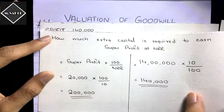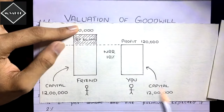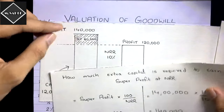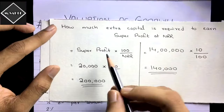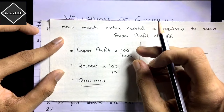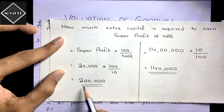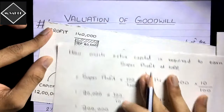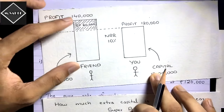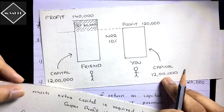In the capitalization method, we take that super profit and find out how much extra capital is required to earn that super profit at the normal rate of return. To value the goodwill, take the super profit and multiply it by 100 divided by NRR — you just flip the normal profit formula. So twenty thousand into 100 by 10 gives you two lakh.